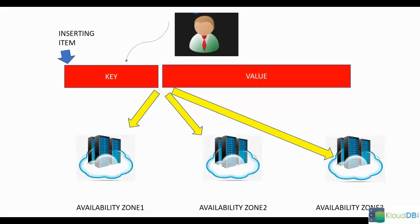But what is the problem with storing data in three different data centers or availability zones? For an item to reach the three data centers or availability zones, it's going to take some time. In the case of DynamoDB, according to documentation, it takes up to one second to reach three availability zones and get consistent across all data centers.